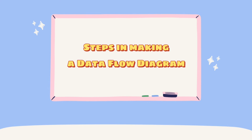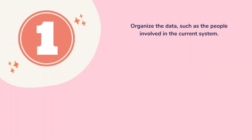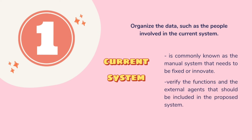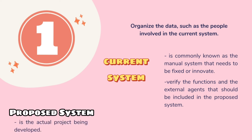Let's proceed to the last topic: the steps in making a data flow diagram. Step number one: organize the data, such as the people involved in the current system. A current system is commonly known as the manual system that needs to be fixed or innovated. However, if you are going towards the development of a system design, verify the functions and the external agents that should be included in the proposed system. A proposed system is the actual project being developed.